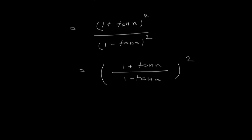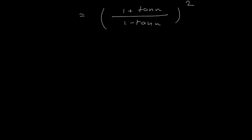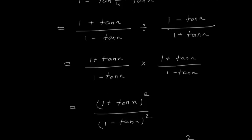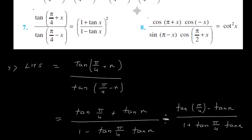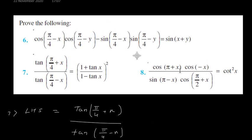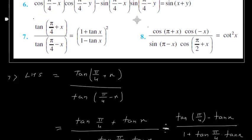This can be written as 1 plus tan x upon 1 minus tan x the whole square, which is your RHS. So LHS is equals to RHS. 7th problem is done.